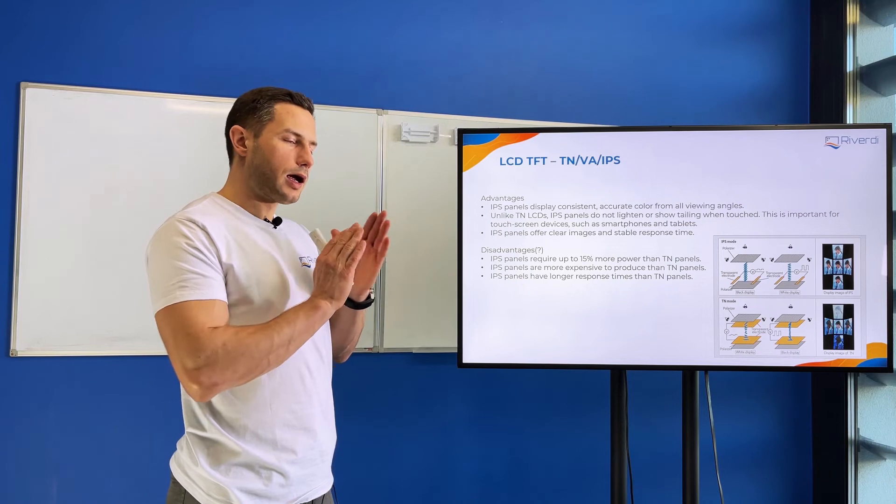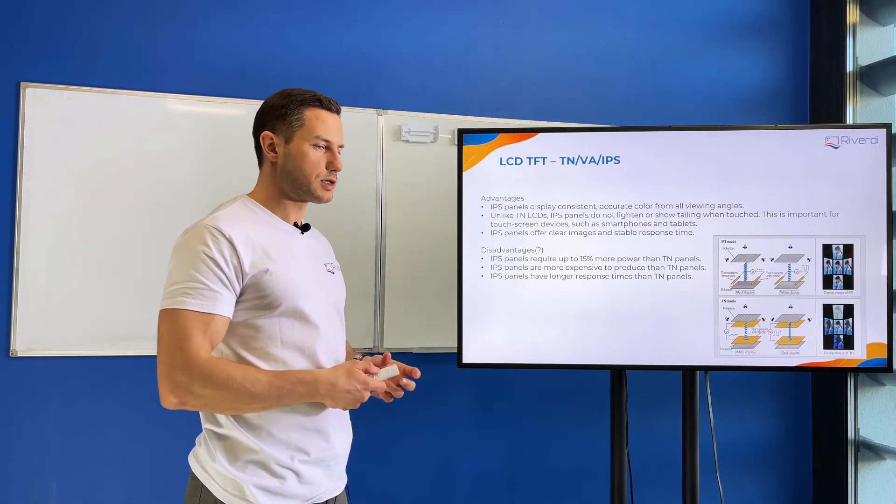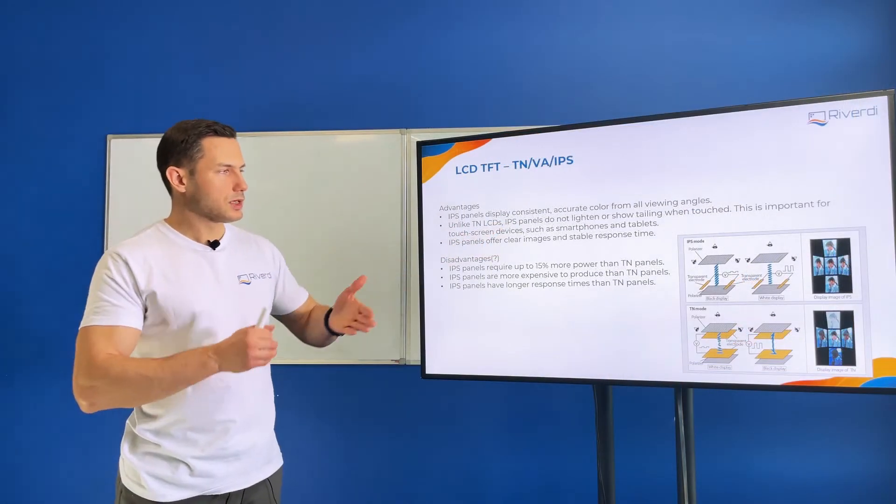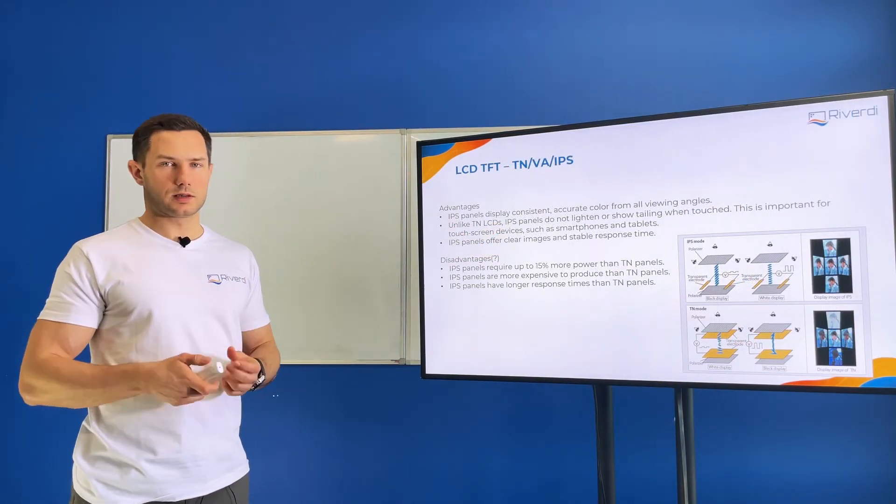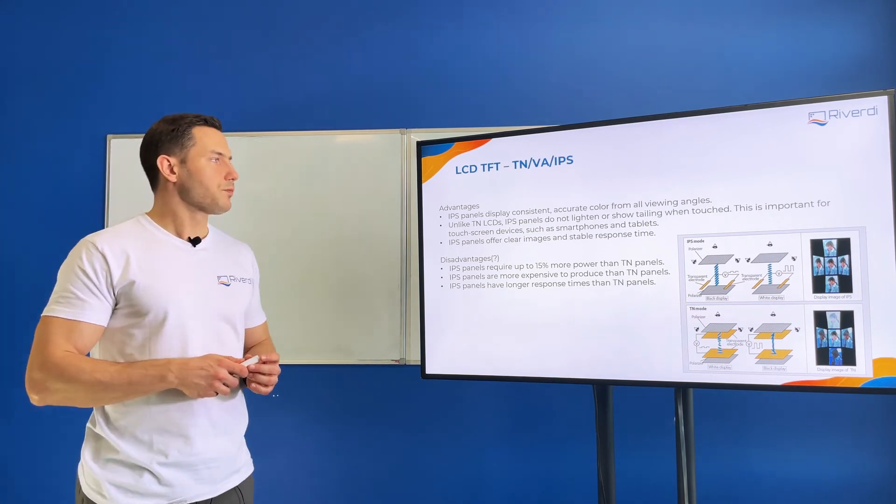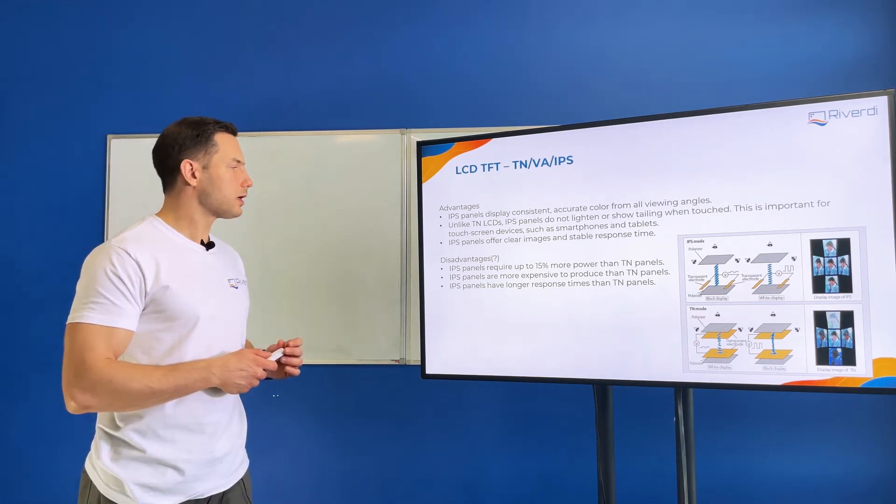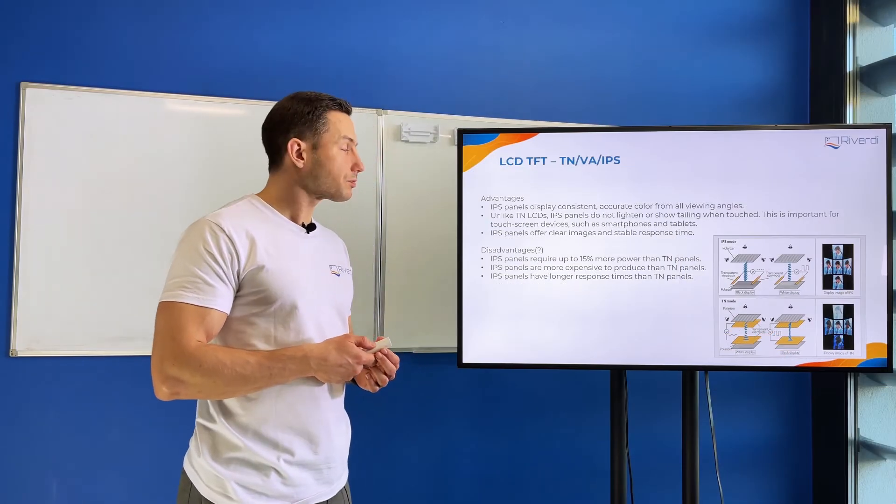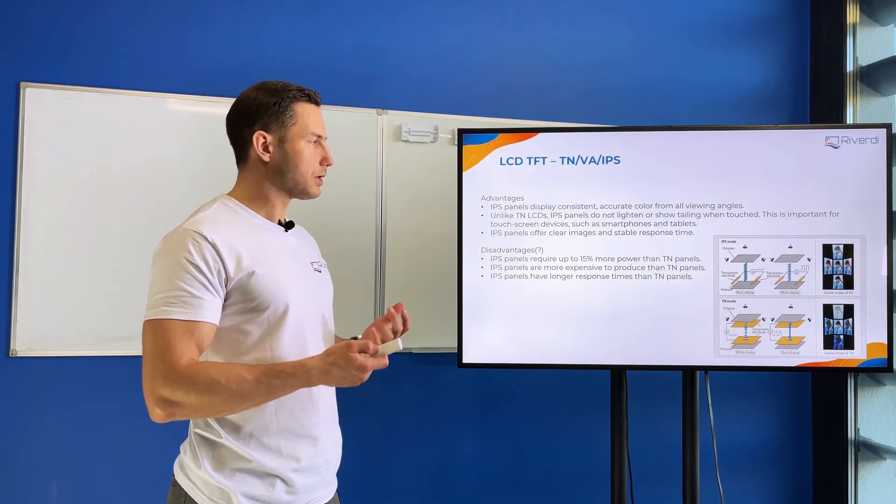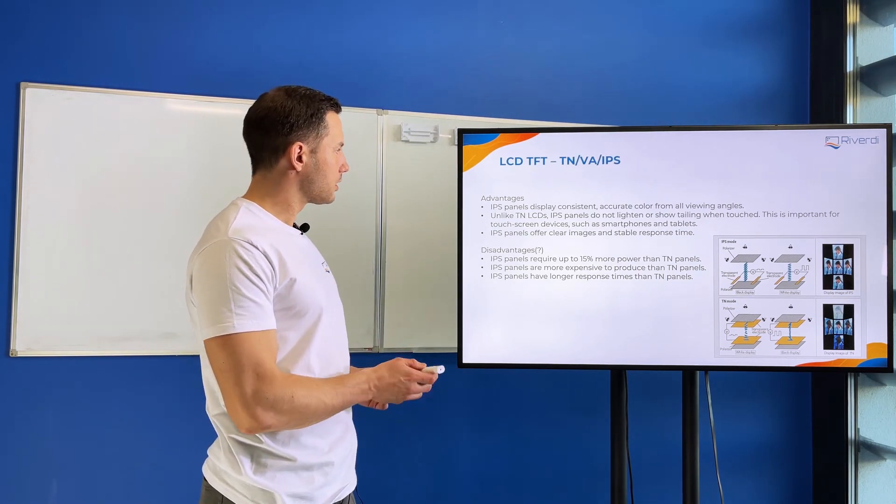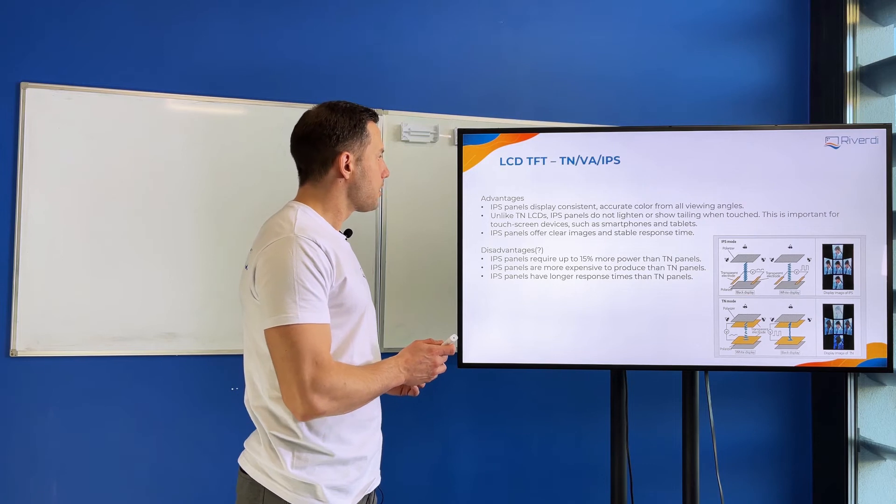So when we touch the touch screen we push actually the display as well and we squeeze the cells with this mechanical force. And when we have a TN display, every squeeze of the cell changes the image suddenly. With IPS, because we have in-plane switching different crystal organization, this effect is lower. It's not completely removed but it's way lower. That's why IPS is very popular for smartphones, tablets, etc. when we have touch screens usually optically bonded.